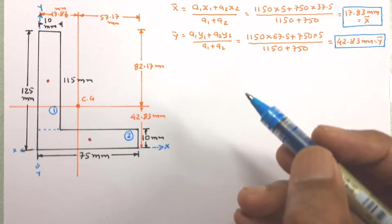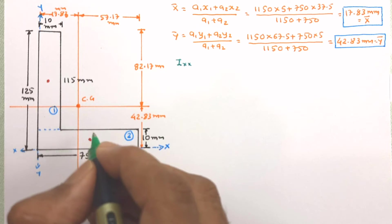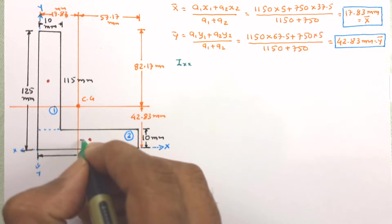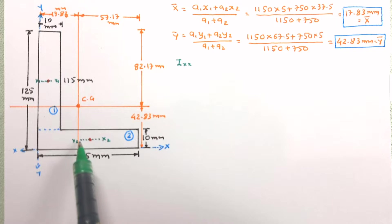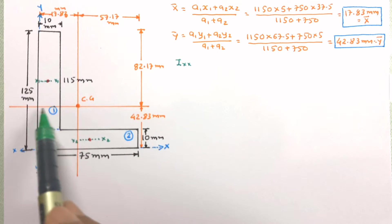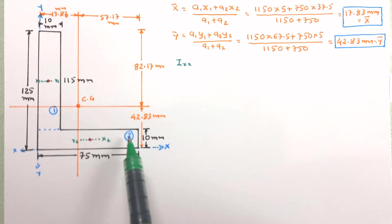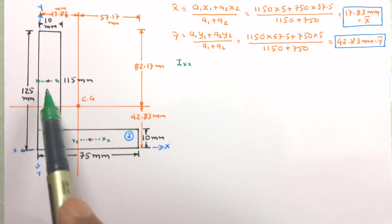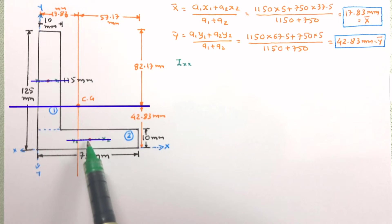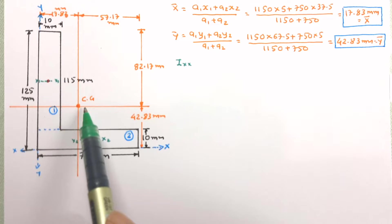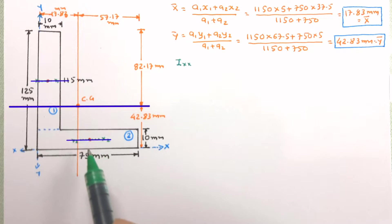Now we want to work out the moment of inertia about the XX axis. For that, let us identify the centroidal XX axis for each individual component: this is the X1X1 axis for the first figure and the XX axis for the second figure. To determine the moment of inertia of the complete figure about its own centroidal axis, we use the parallel axis theorem. Let us write the equation.